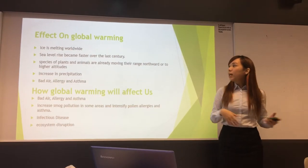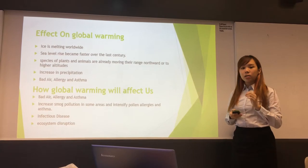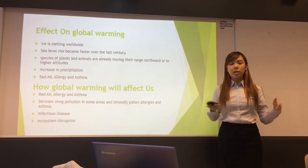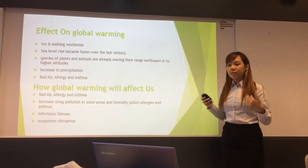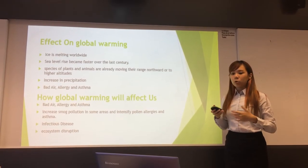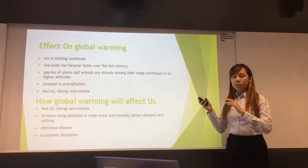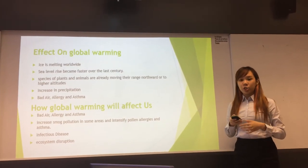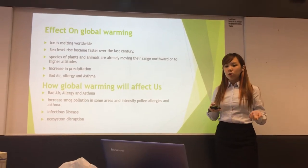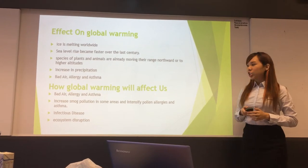So what is the effect of global warming? Global warming has caused ice worldwide to melt faster, leading to an increase in sea levels. Many species and plants are also moving their range northward or to higher altitudes as a result of warmer temperatures. Precipitation like rain and snow will also increase across the globe on average.